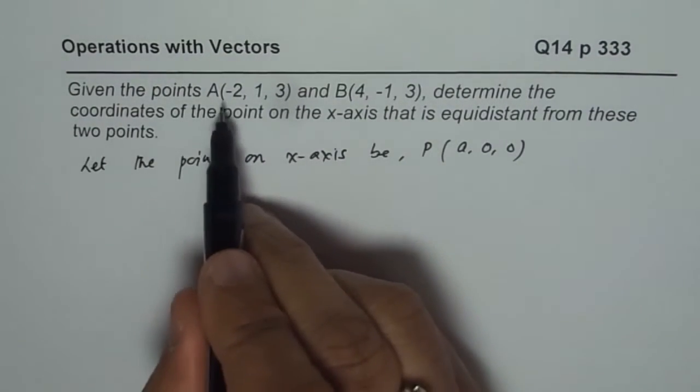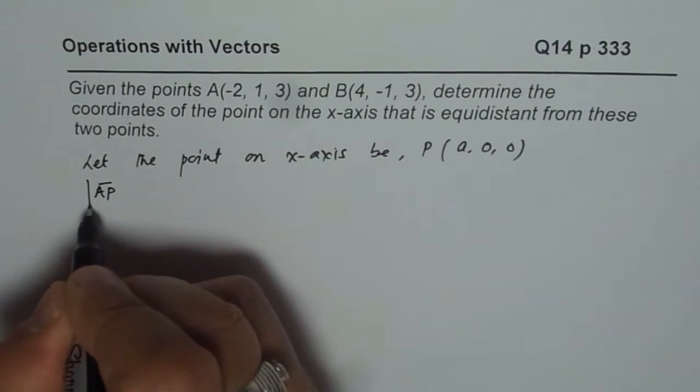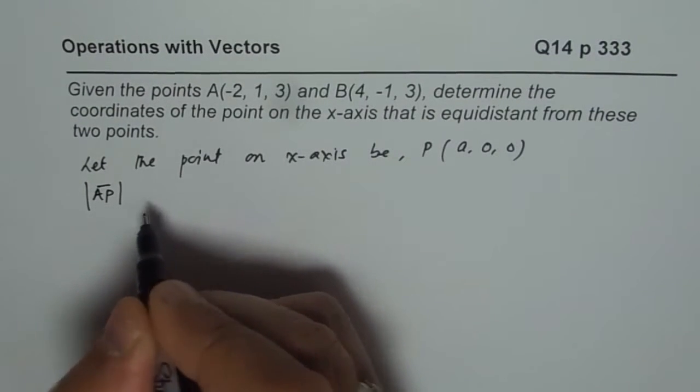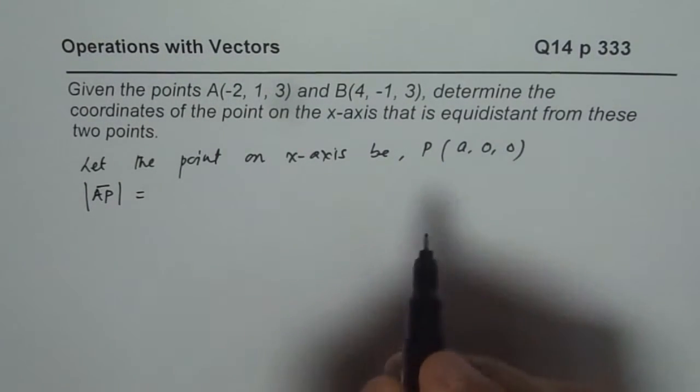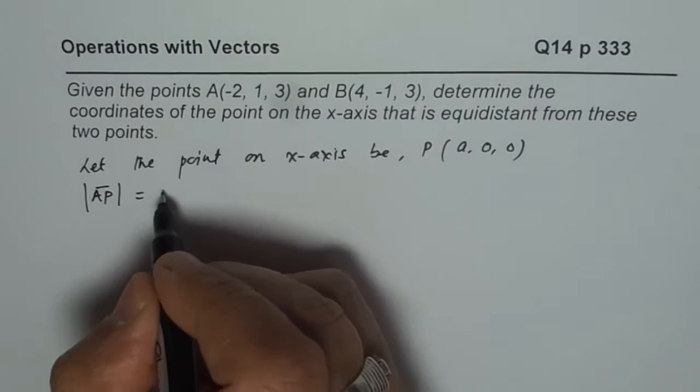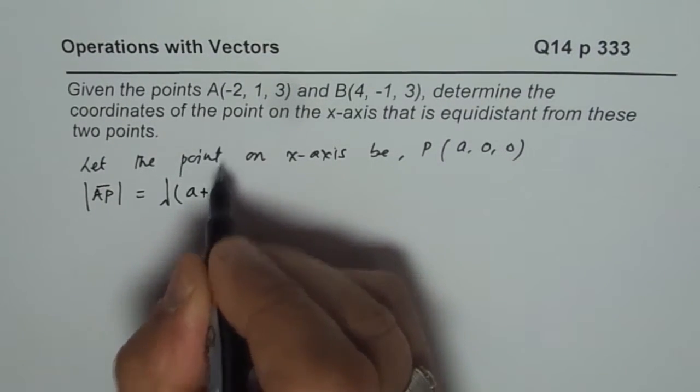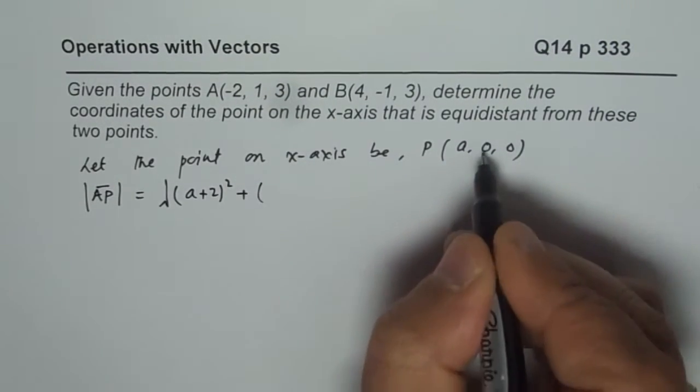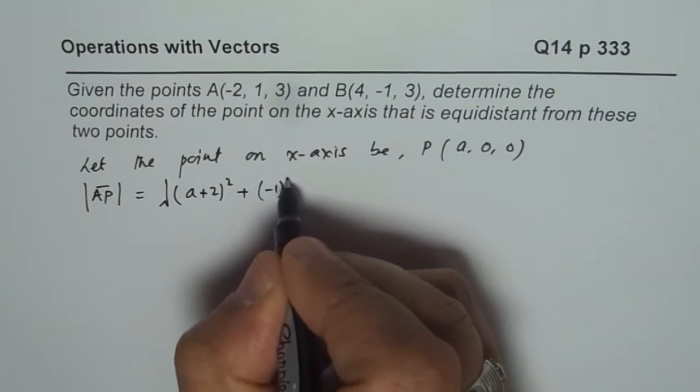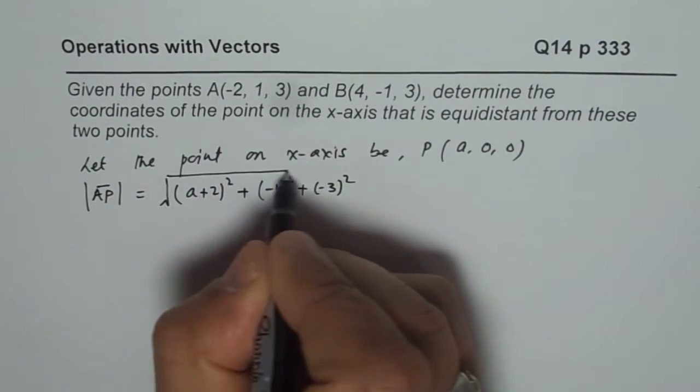When we say that the distance is the same from A and B, that means the magnitude of AP should be equal to magnitude of BP. So let us find what is AP. AP will be square root of (a + 2)² plus (0 - 1)² plus (0 - 3)². So that is AP.